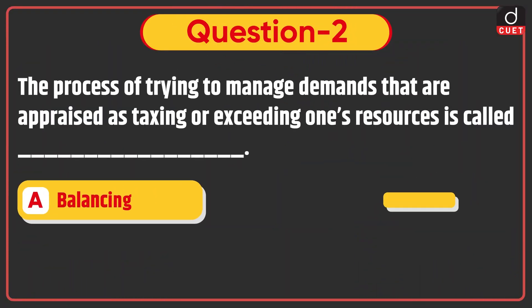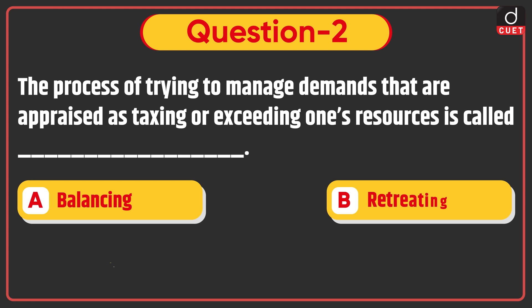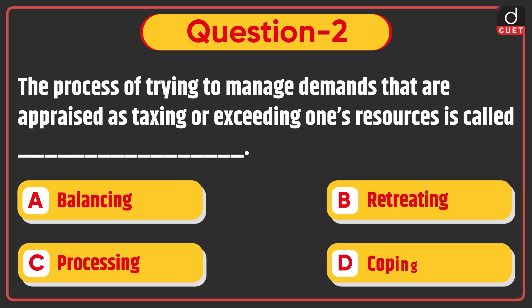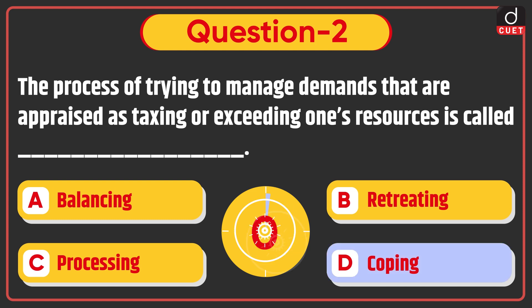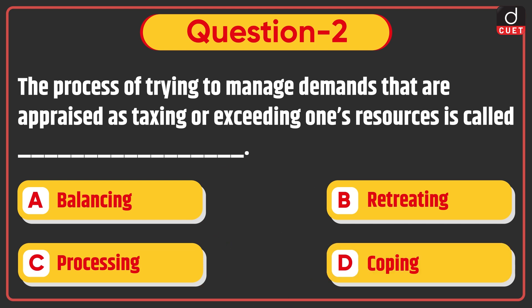Next question: The process of trying to manage demands that are appraised as taxing or exceeding one's resources is called Dash — Balancing, Retreating, Processing, or Coping. The correct answer is option D, Coping.